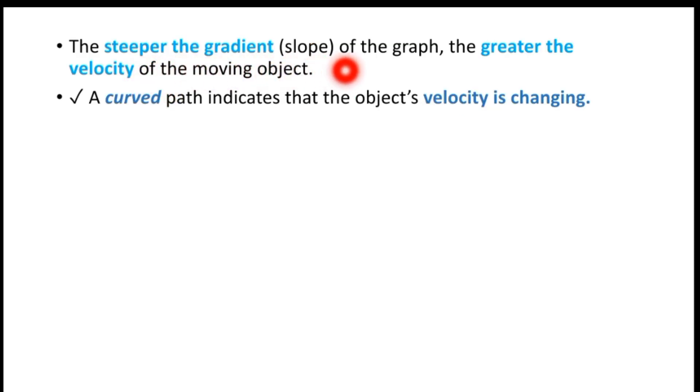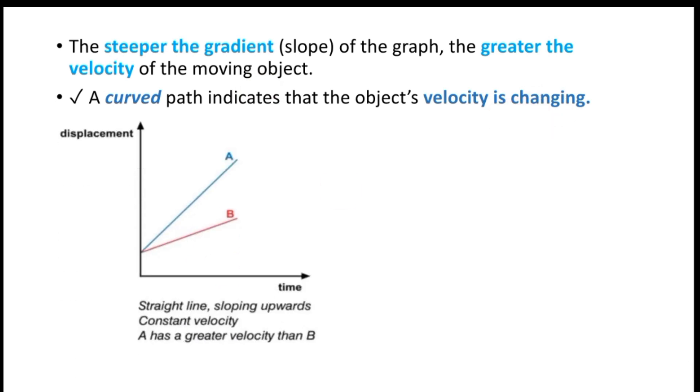The steeper the gradient or slope of the graph, the greater the velocity of the moving object. If the gradient is steeper, that means greater velocity. If the slope is steeper, the object is moving faster. A straight line sloping upward with constant velocity means constant speed.